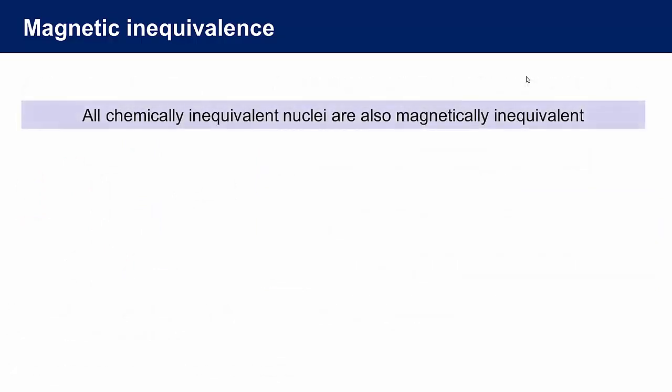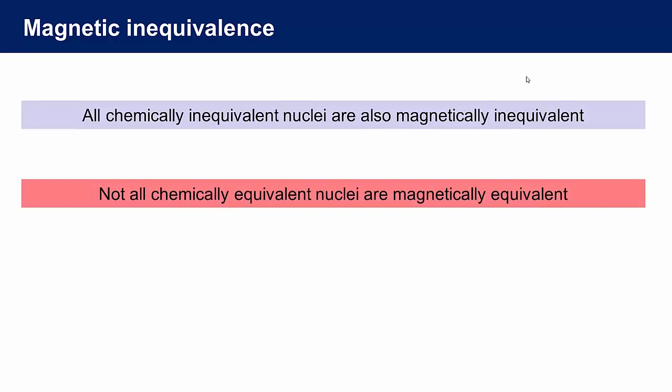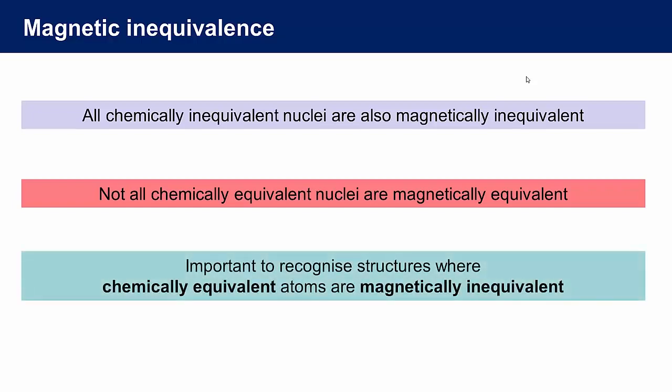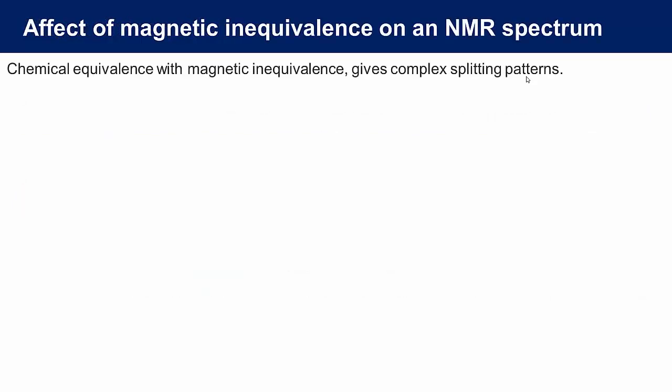At this stage, it's good enough to realize and recognize that, all chemically inequivalent nuclei are also magnetically inequivalent, and, although the chemically equivalent nuclei are frequently magnetically equivalent, there are many cases where chemically equivalent nuclei are magnetically inequivalent. It is important to recognize these situations, because when we do have molecules where there is this sort of magnetic inequivalence, we do not observe the familiar binomial doublets and triplets and quartets. Instead, we observe rather complex splitting patterns. In such cases, it's usually enough to describe the signal as a multiplet.